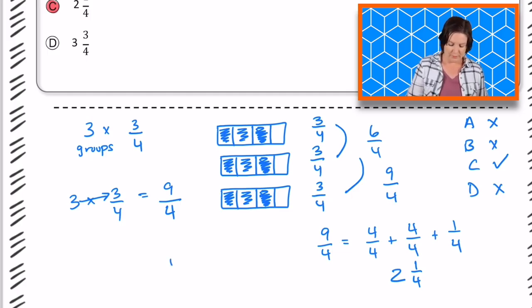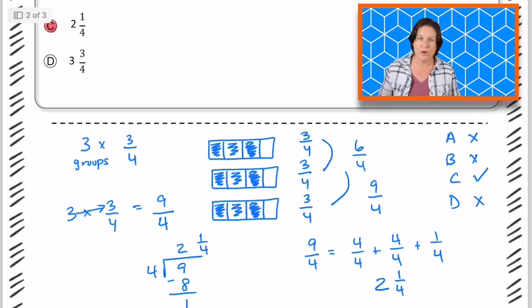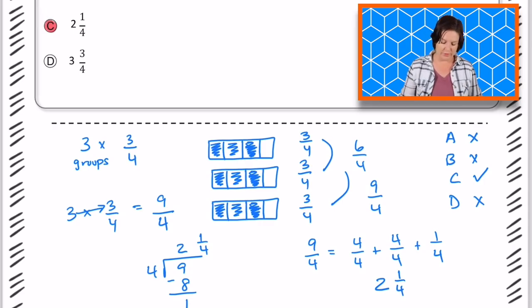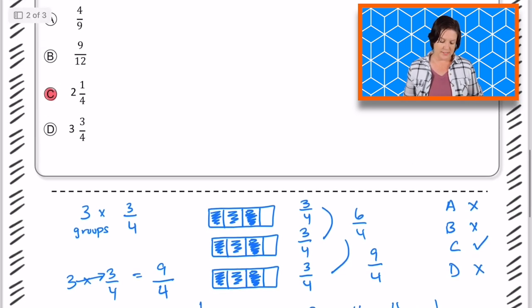You could also change it into a mixed number like this by creating a division expression. And we know that 4 goes into 9 two times, which would be a remainder of 1/4. Well, a remainder of 1, or written in a fraction as 1/4. So that is a couple different ways there to solve that one. C is your answer.